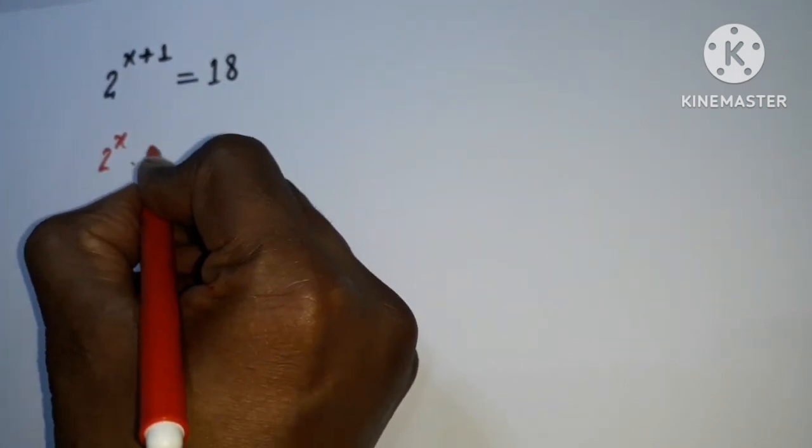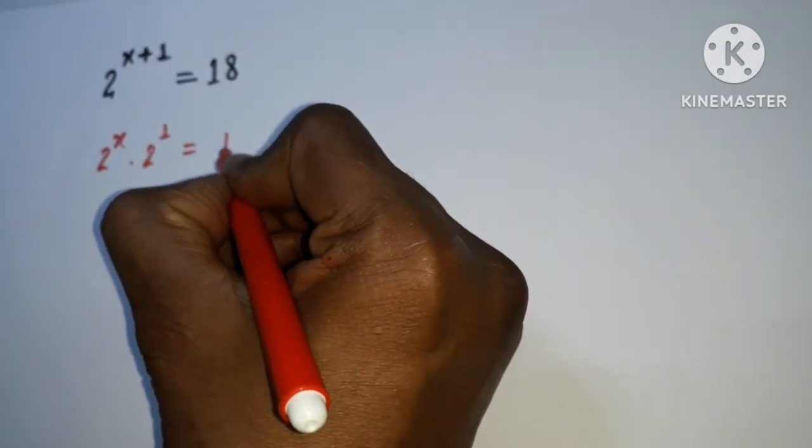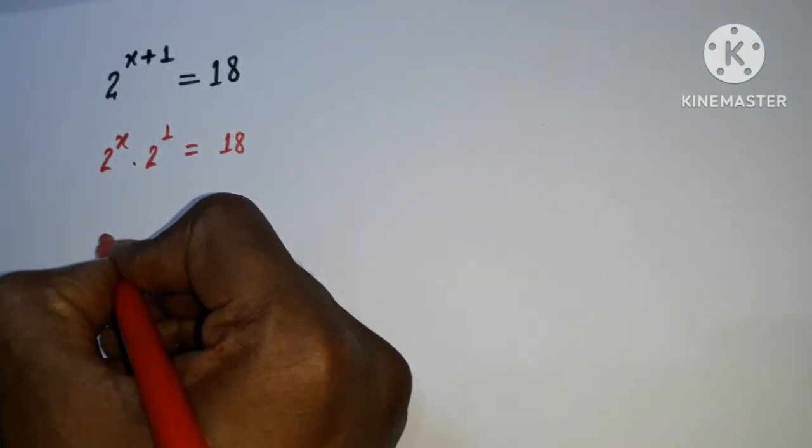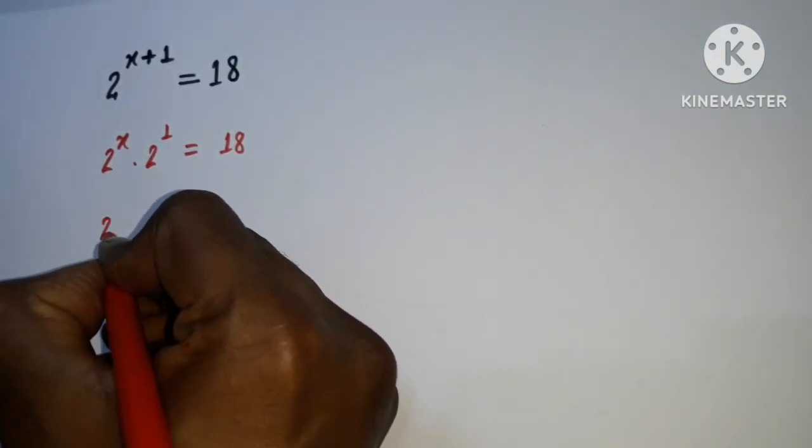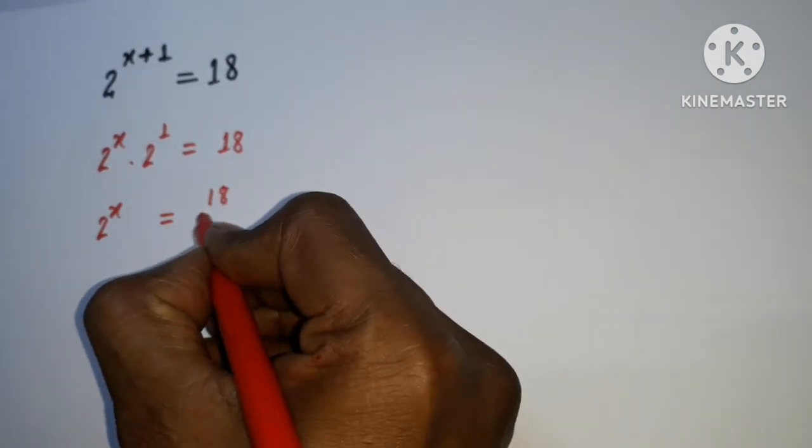So 2 to the power x and we can write 2 to the power 1 in this way, and 18 is as it is. And here 2^x will be here and the constant term 18 will go on the right side.